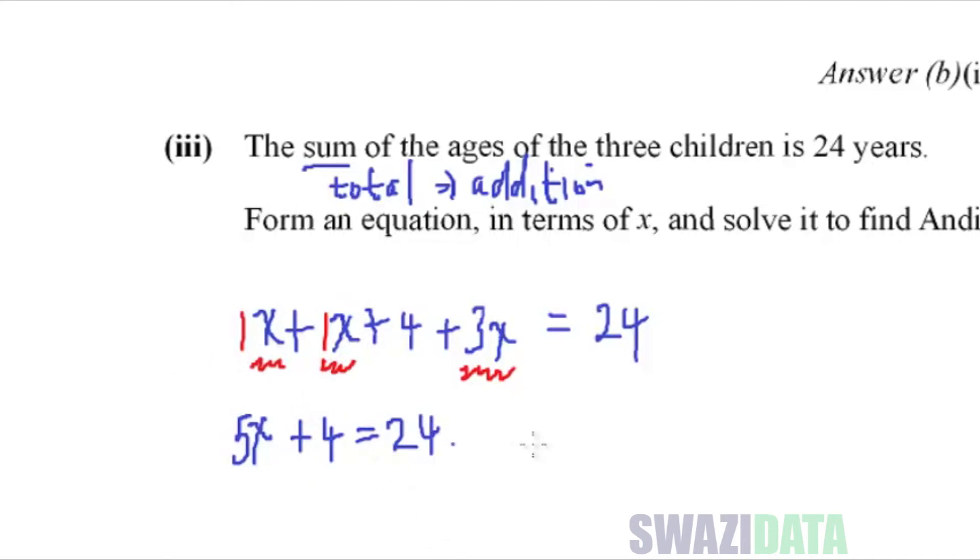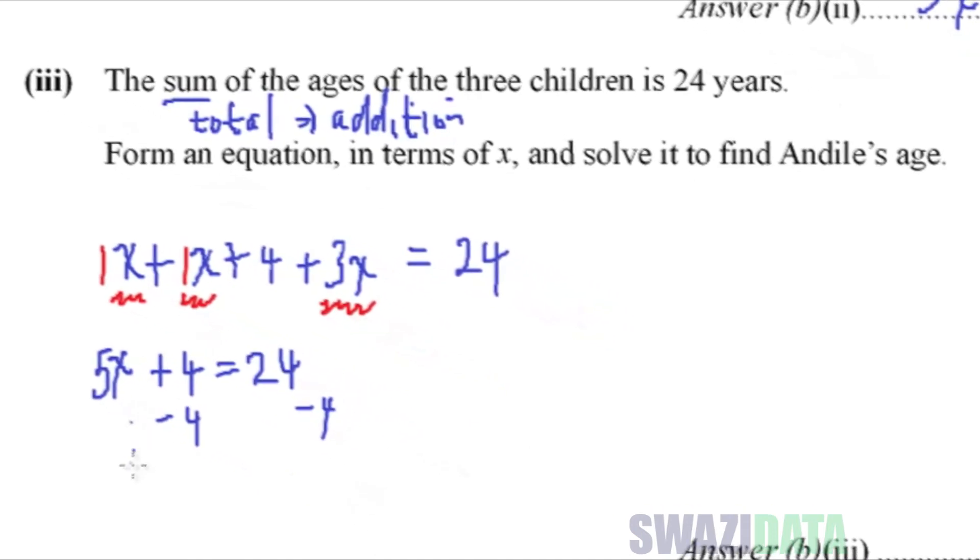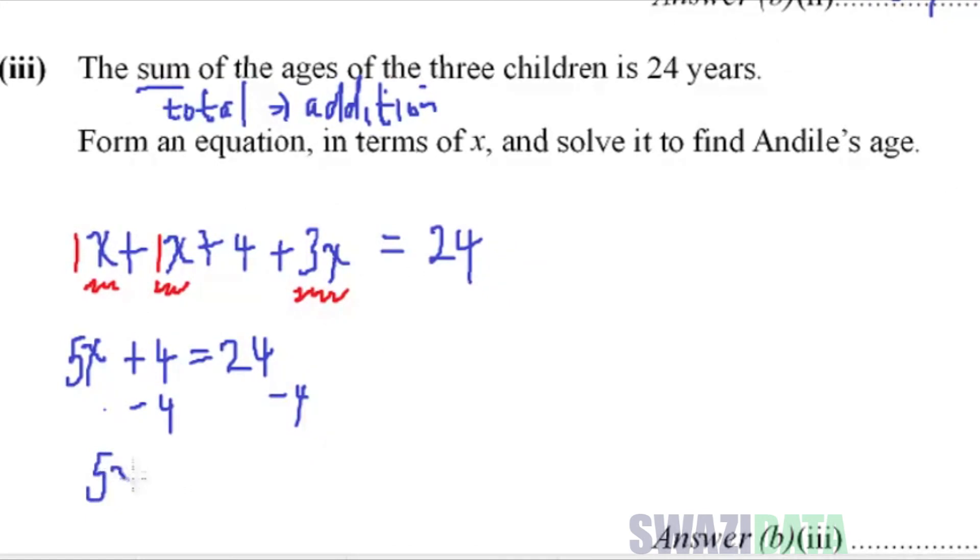And then you have to subtract 4 both sides. So subtracting 4, and this side, you subtract 4. You will have 5X is equal to, because 4 minus 4 is 0, 24 minus 4 is 20. Then you divide by 5 to make X the subject.